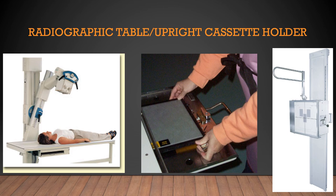The upright cassette holder also has a bucky inside it. In some situations you can remove the grid inside the upright cassette holder by opening the facing of the cassette holder. However, be careful — if it gets put back in backwards, your x-rays will be very poor. Try not to remove a grid unless it is specifically needed to place it over top of an image receptor or on top of a cassette.